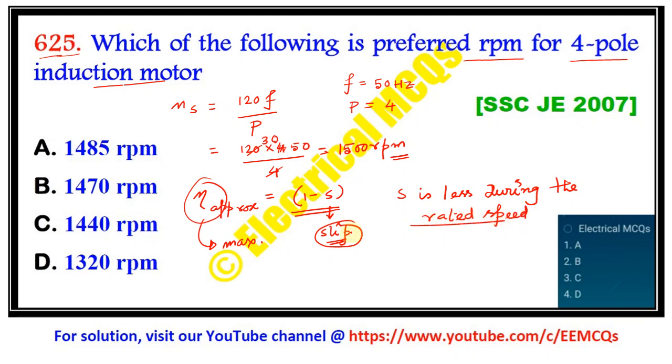And what we know: this slip is nothing but Ns minus Nr by Ns, where Nr is basically the speed of the motor.